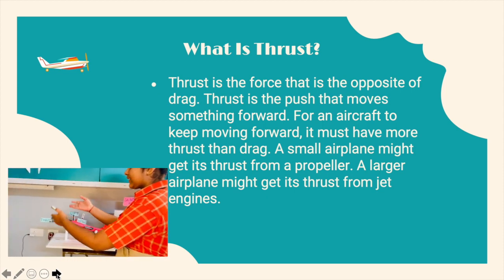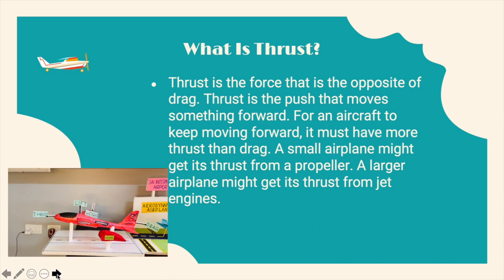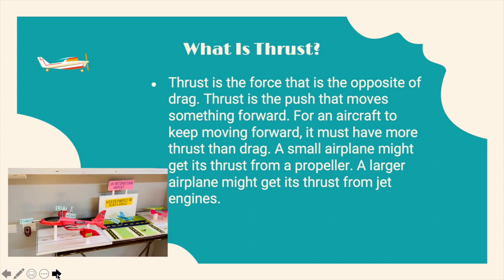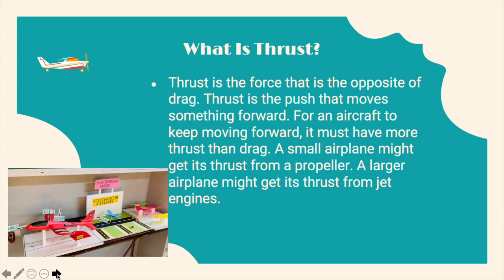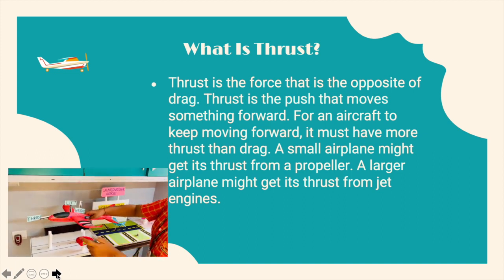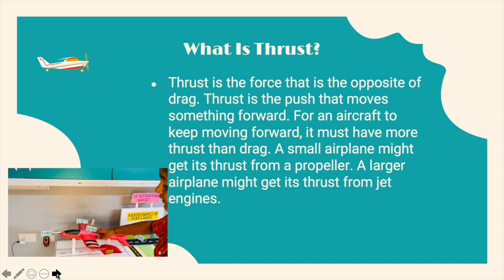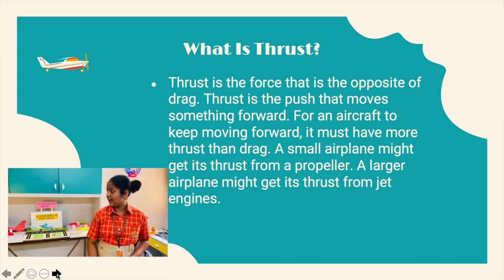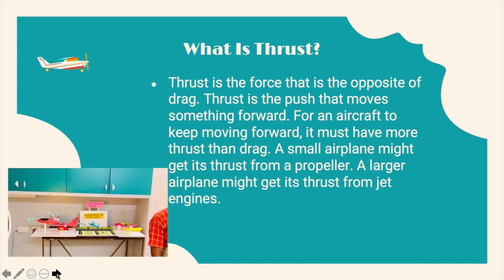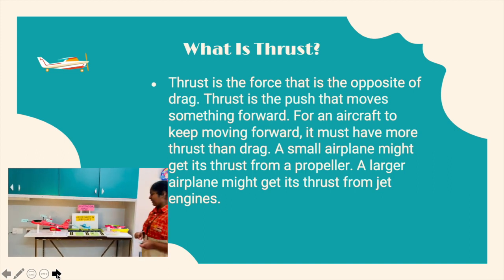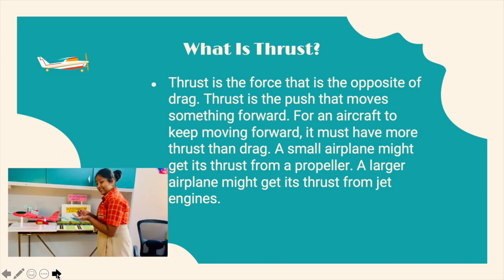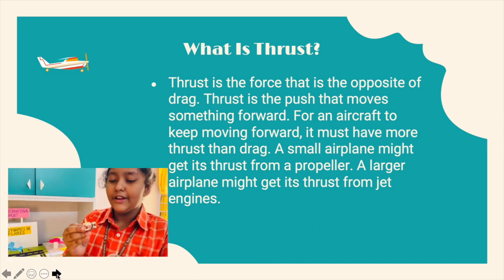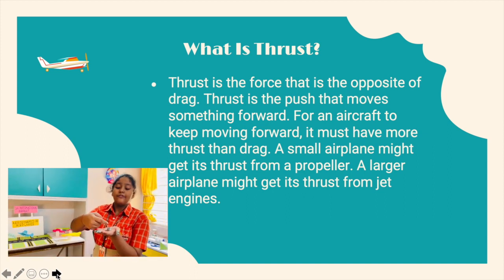Now let us know what thrust is. Thrust is the force that is the opposite of drag — a push that moves something forward. For an aircraft to keep moving it must have more thrust than drag. A small airplane might get its thrust from a propeller. This is an example of a small airplane and this is its propeller, so this airplane will get its thrust from a propeller.